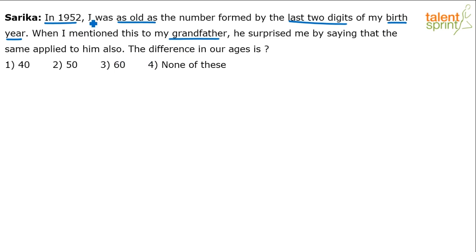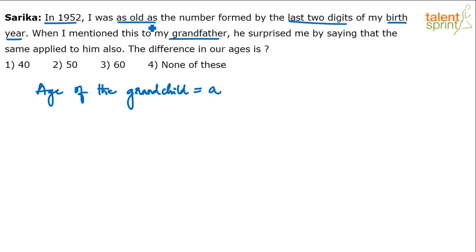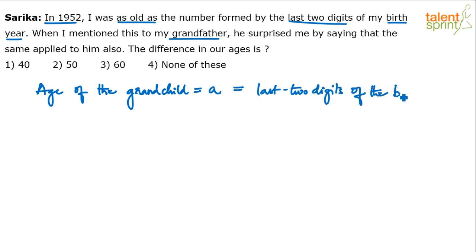It's easy to find out the age of the grandchild. Let's assume the age of the grandchild is 'a' — a two-digit number. Now, 'a' itself represents the last two digits of the birth year. Don't get confused — 'a' is a variable, so it looks like one digit, but instead of using x or y, I'm using 'a'. The age of the grandchild is 'a', and this 'a' should represent the last two digits of the birth year.